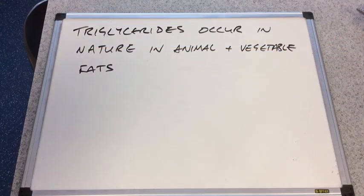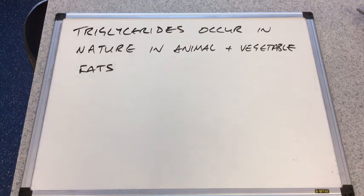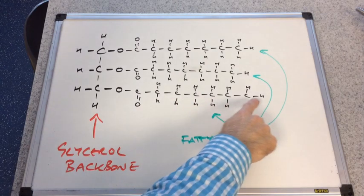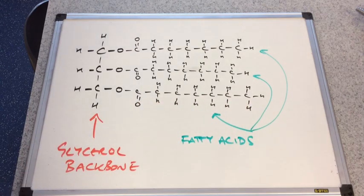So where do we get triglycerides from? Well, these molecules occur in nature in animal and vegetable fats. And what the body does is it breaks them down into these fatty acid molecules. So what we're going to do now is we're going to look at these fatty acid molecules in some more detail.